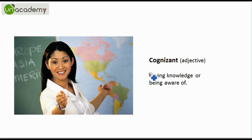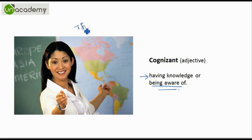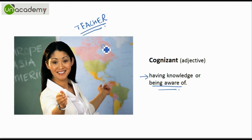Next is Cognizant. Cognizant means to have knowledge or be aware of. Here we have taken a teacher as an example — teachers have knowledge of their subject and they are aware of the happenings related to the subject. So that is how you can relate a teacher to the word cognizant.